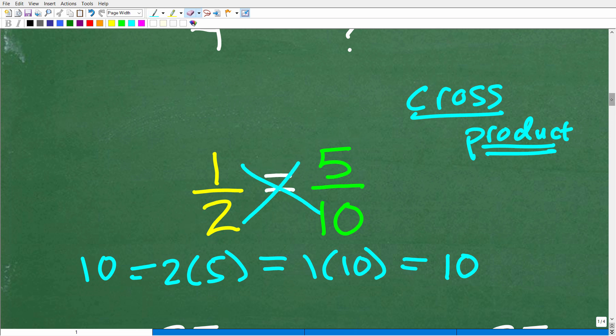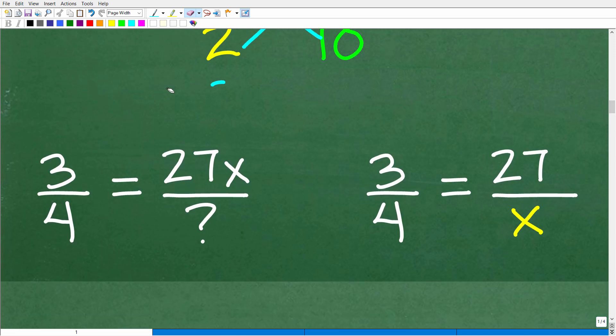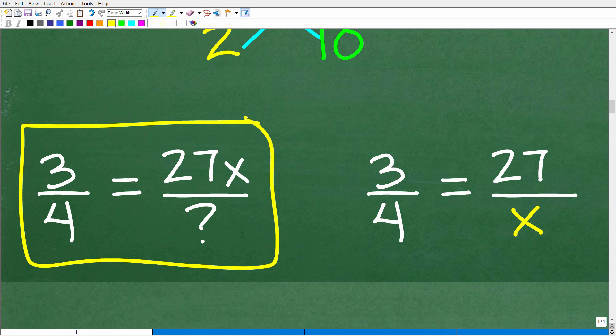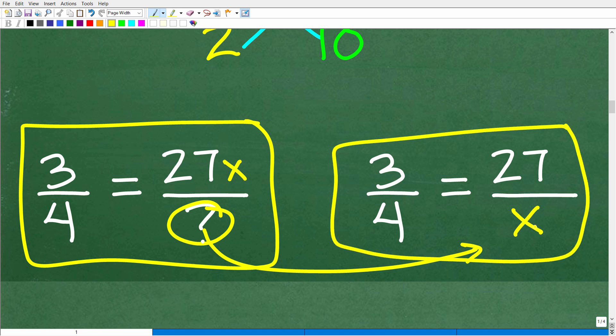All right, so let's go ahead and use the cross product to take a look at this question. So, here is our problem. We have 3/4 is equal to 27x over some denominator. But what happens if we just kind of get rid of this x here for a second? Let's suppose this is our question. Well, if this is our question, then we're looking for the denominator of this simple proportion. And you can represent any number that you're looking for with a simple variable. So, let's go ahead and just call that variable an x.